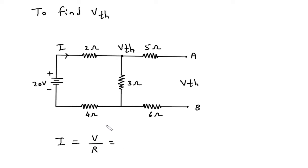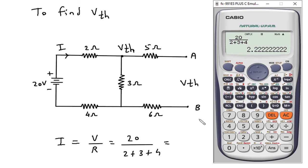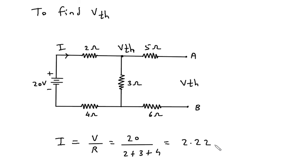Now V is 20 volt and R is 2 plus 3 plus 4. So this will be 20 divided by 2 plus 3 plus 4, which equals 2.22 ampere. That is the value of current I.